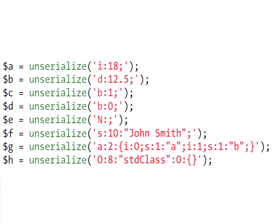For an object, 'O' means object, '8' is the class name length, followed by the class name, and then an array of properties to serialize. However, the serialize and unserialize functions are not very handy — they are useful for basic use cases, but not for many real-world scenarios.